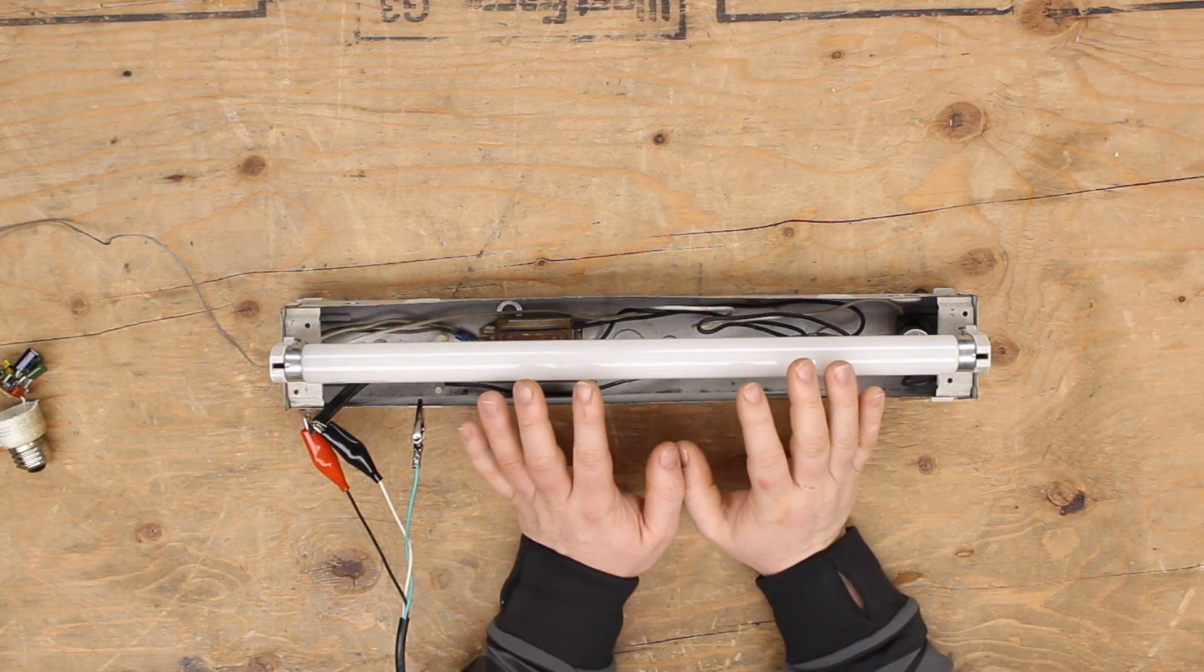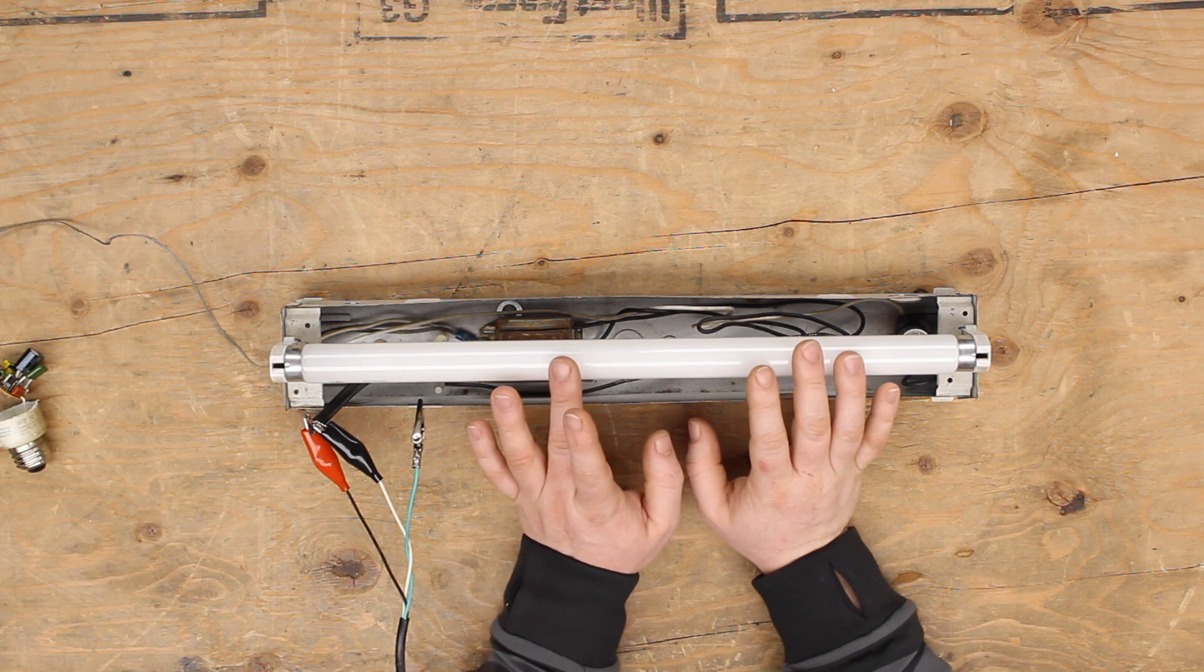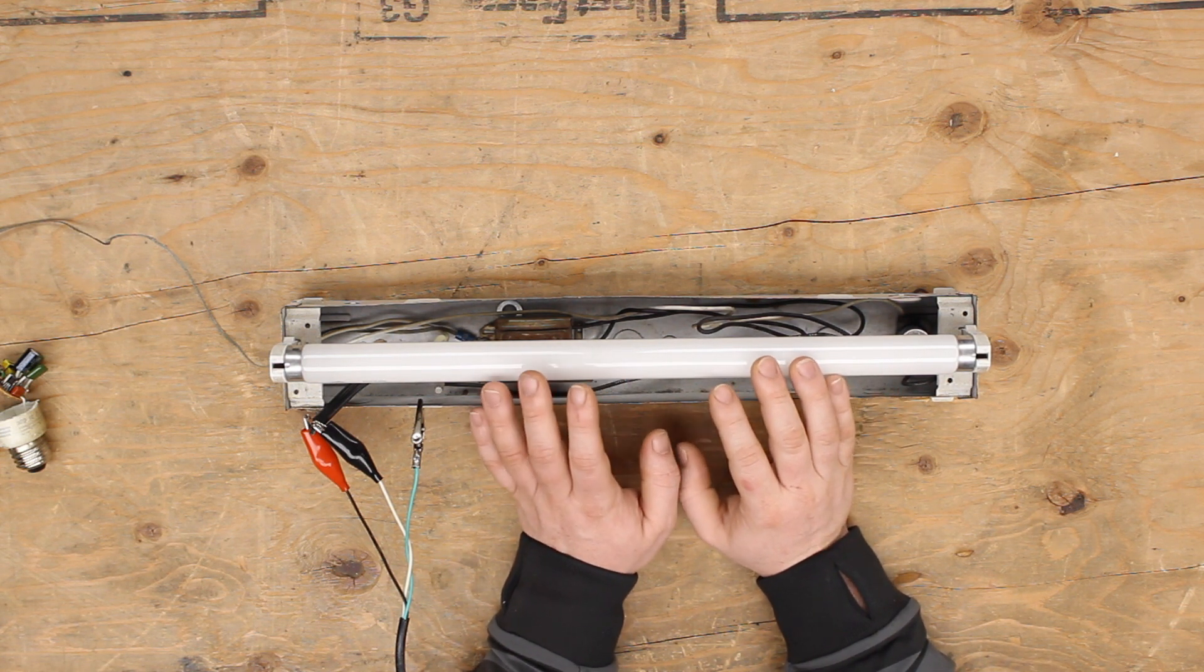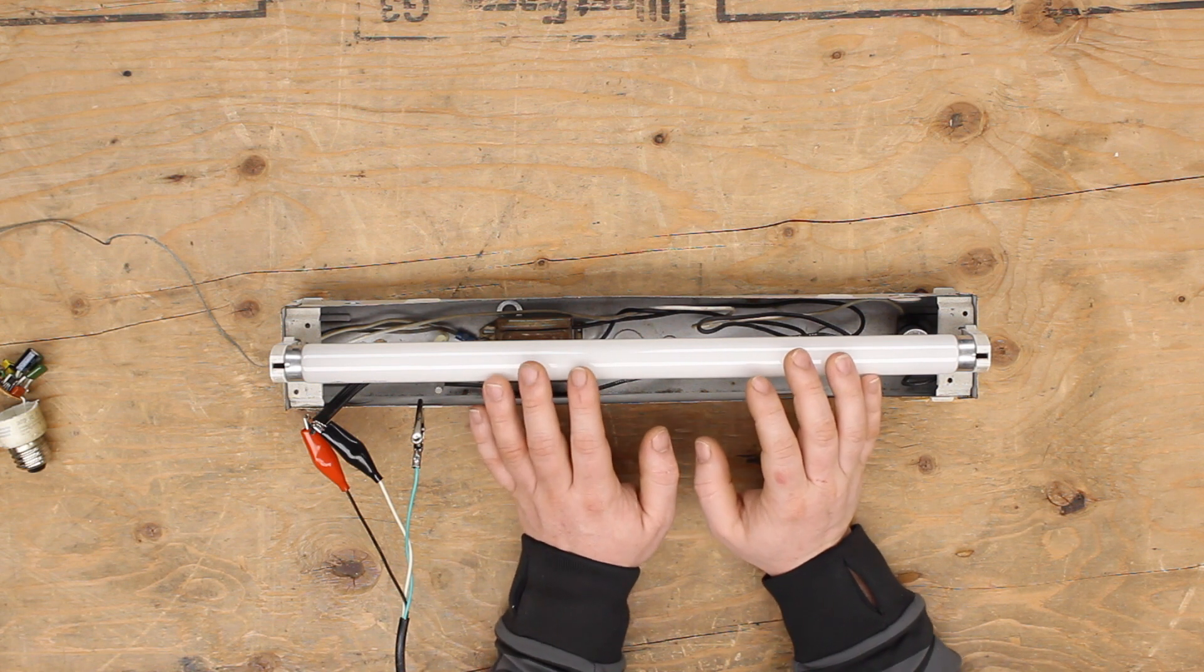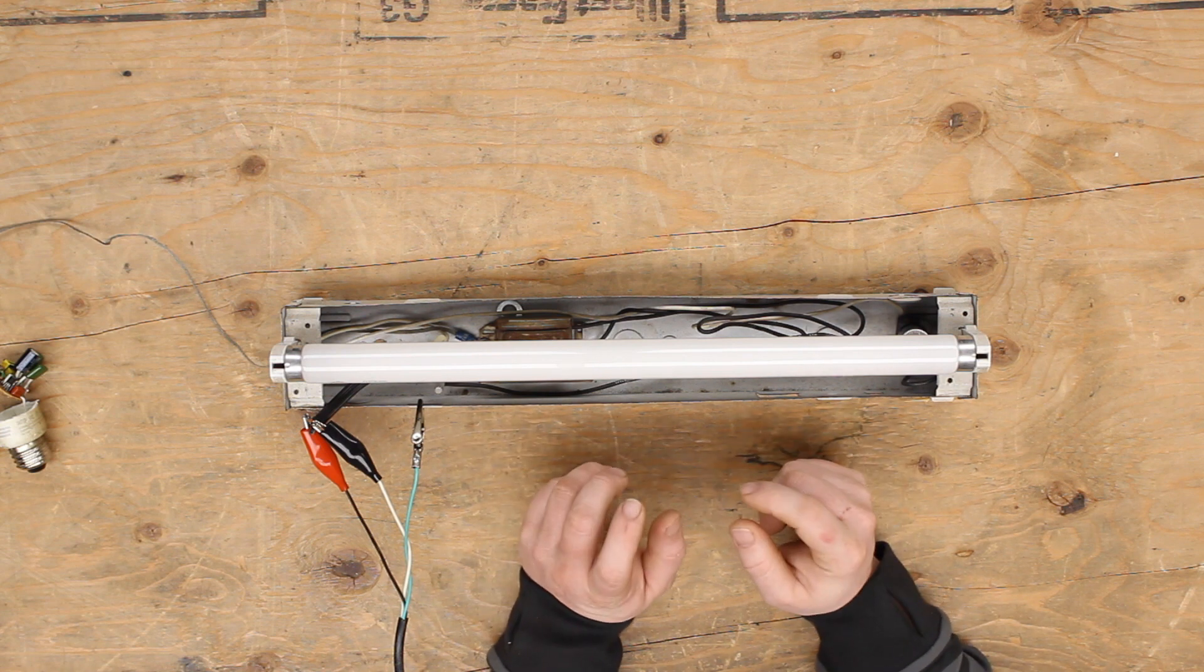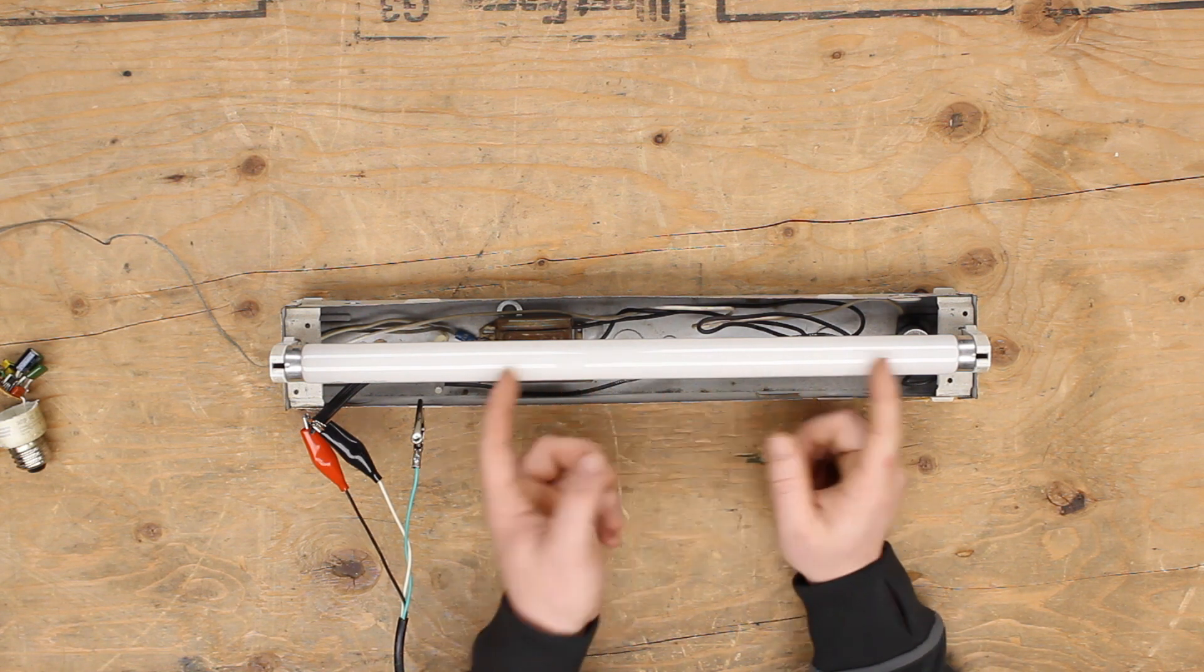So what I have here is an F15 T8 warm white fluorescent light. I like to call them 'anything lights' because you'll find them in anything: vending machines, slot machines, arcade cabinets.